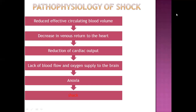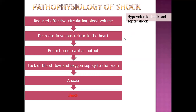In the pathophysiology of shock, first there is reduced effective circulating blood volume, which results in decreased venous return, leading to reduction of cardiac output, then lack of oxygen supply to the brain causing anoxia and shock. Hypovolemic and septic shock start from the point of reduction in effective circulating blood volume, while cardiogenic shock starts from the point of reduction of cardiac output.